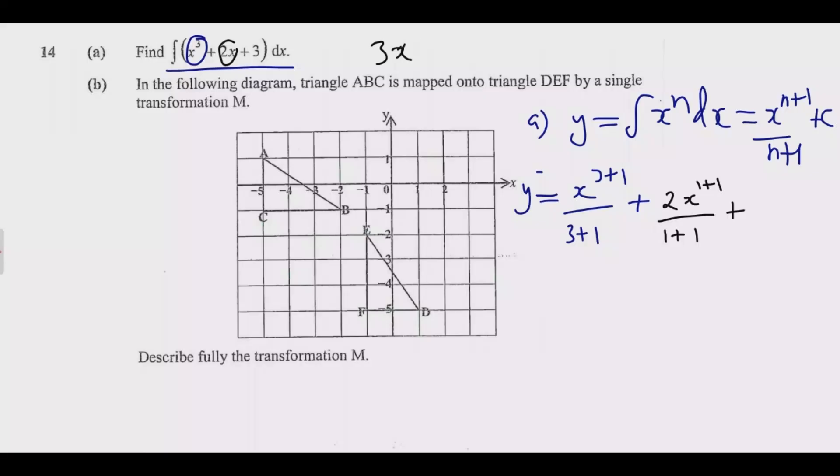3 is the same as 3x to the power 0. Anything to the power 0 is 1, 1 times 3 is 3. So we are going to have 3x to the power 0 plus 1 over 0 plus 1, then plus a constant.